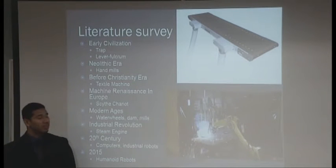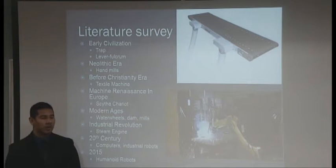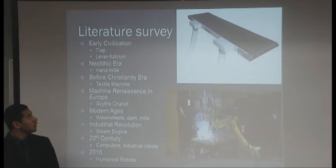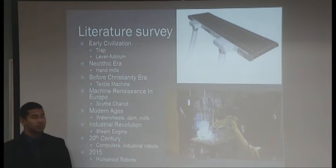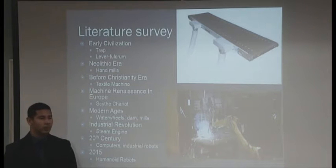Before the Christianity era, the Chinese people created a textile machine that was more focused for the silk industry. Entering the machine renaissance in Europe, the people created a scythe chariot that was more for war. This chariot had gears and shafts that, as it ran, would basically export a series of blades that surrounded the chariot itself, which would not allow enemies to approach the chariot.